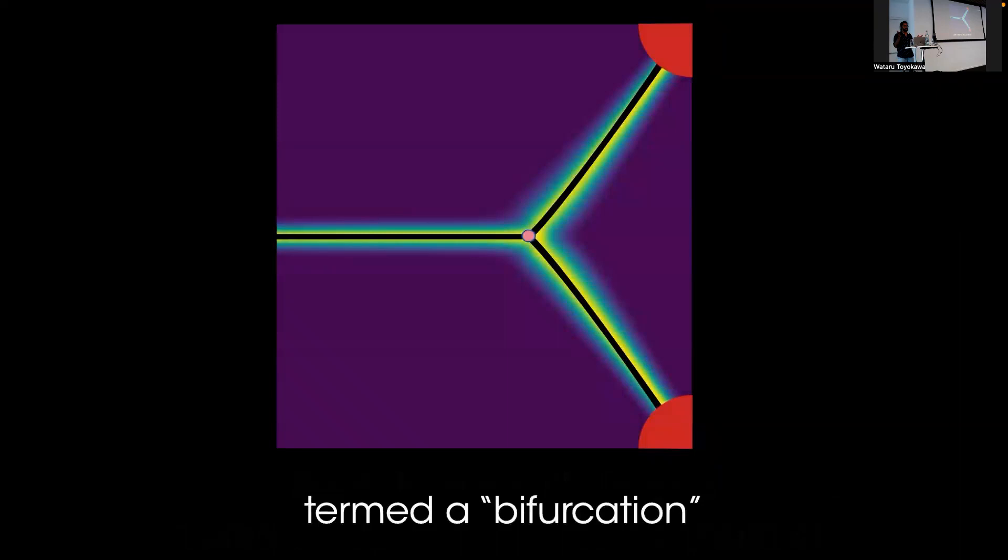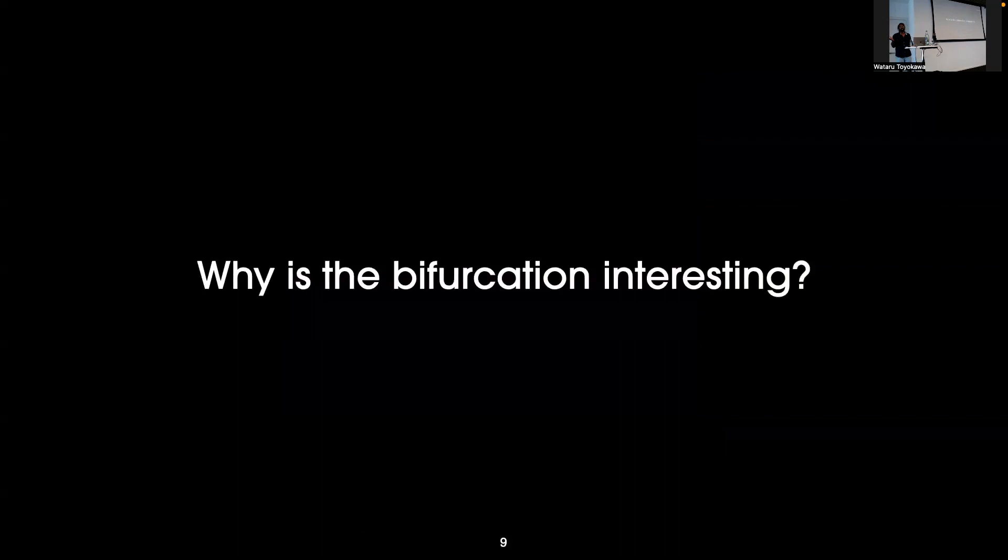Our model predicts that when an animal is presented with two identical options, it should spontaneously move in the average direction between the two options until it hits a critical threshold, at which point it will randomly choose one option or the other. This transition is accompanied by an abrupt change in the neuronal dynamics, what we term a bifurcation.